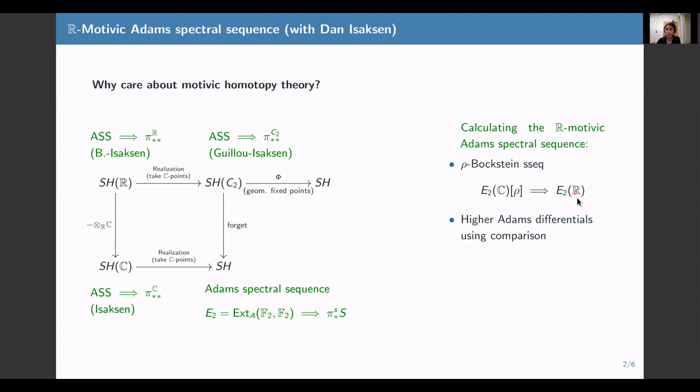Very briefly, I'll outline the strategy. So in order to compute the E2 page, the algebraic component of this R-motivic Adams spectral sequence, we first compute a different algebraic spectral sequence, a Bockstein spectral sequence. The input data for that is the C-motivic E2 page, something that Dan Isaacson has studied earlier, and the output is the E2 page for the R-motivic Adams spectral sequence.